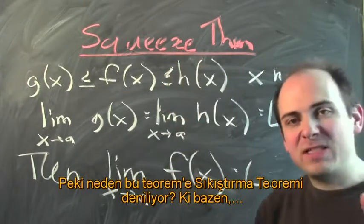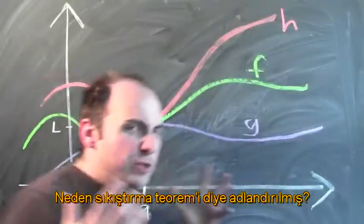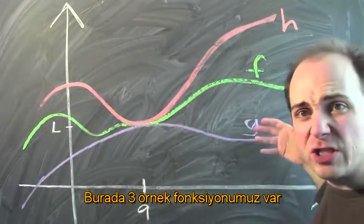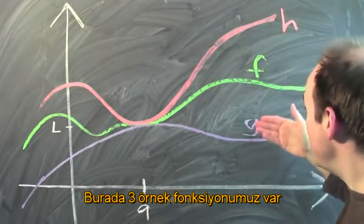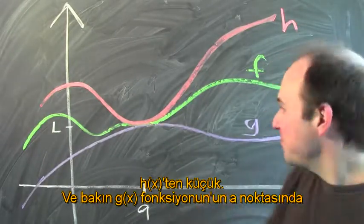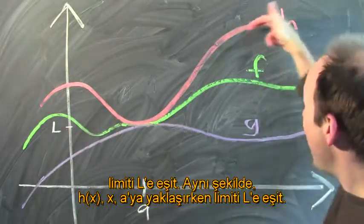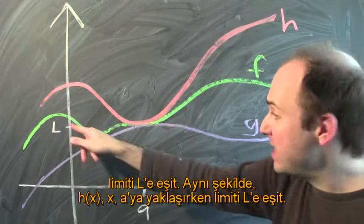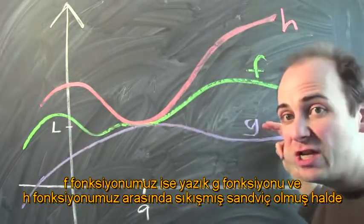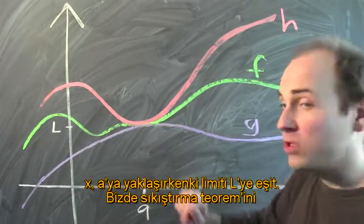Why is this called the squeeze theorem — or some people call it the sandwich theorem or the pinching theorem? Here's pictorially why. With three functions g, f, and h, where g of x is less than f of x and f of x is less than h of x, the limit of g of x as x approaches a is l, and the limit of h of x as x approaches a is l. f is squeezed or sandwiched between h and g, and consequently, the limit of f as x approaches a is also equal to l.